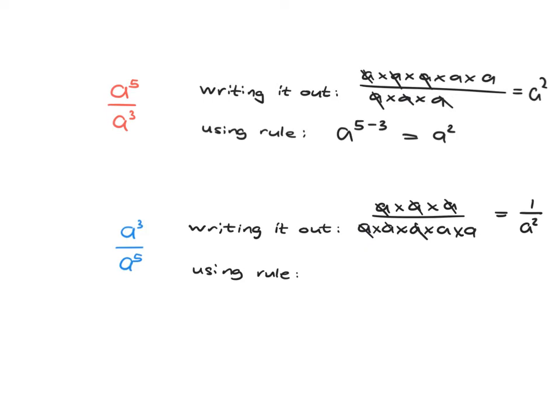Now if we were to calculate a cubed over a to the 5 using the rule, the rule says we take what's at the top and subtract what's at the bottom, and so we would get a to the minus 2. And so this tells us very nicely that for all this to make sense, a to the minus 2 must be equal to 1 over a squared.